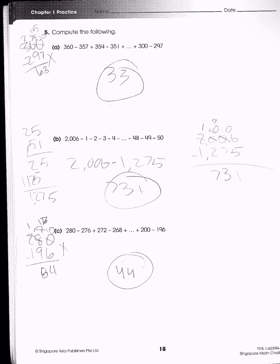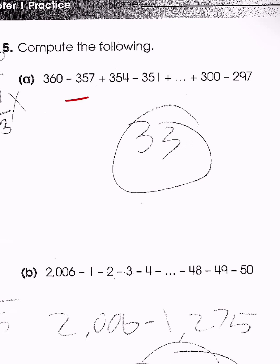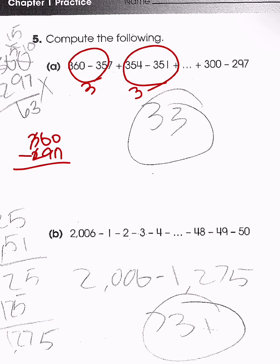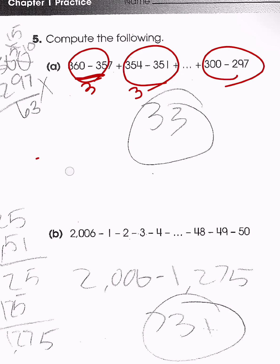Now for problem A: group into pairs — 360 minus 357 is 3; 354 minus 351 is 3. Going from 360 down to 297, we have 63 numbers in total. Grouping them into pairs, each giving 3, we have — well, 63 numbers give us groups, and since each group gives 3, the total answer comes to 33.